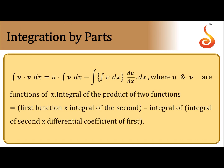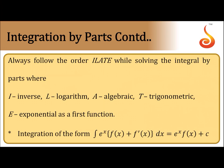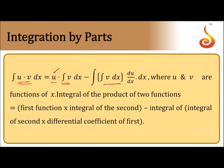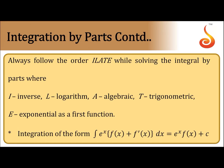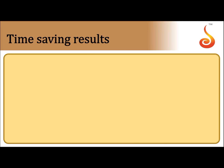Next, integration by parts: whenever you find a product of functions, you use integration by parts. It equals the first function times the integral of the second function, minus the derivative of the first function multiplied by the integral of the second function. To identify which is the first function and which is the second, use the ILATE rule — Inverse, Logarithmic, Algebraic, Trigonometric, and Exponential — giving preference in that order.